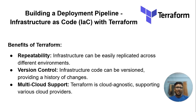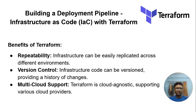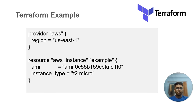To build a deployment pipeline, we will use Terraform and IaC. The benefits of using Terraform here are: we can replicate the code across different environments, we can store versions of changes, and Terraform is cloud-agnostic — as we all know — so we can have multiple cloud support. We can have a database on Azure, some services on AWS, some on GCP, and bundle them all together.